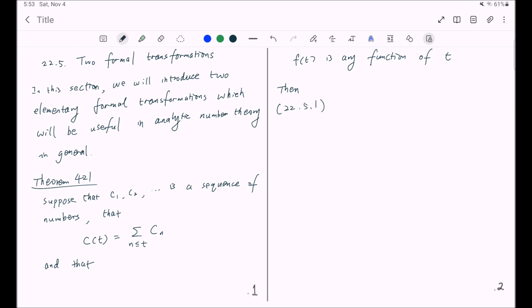Then, we have the following summation formula. This formula tells us we can sum up c_n times f(n) for n less than or equal to x in another way: by summing up those c_n times the increments in f(n), and there is a remainder term, c(x) times f(floor of x). So this is the first formal transformation.